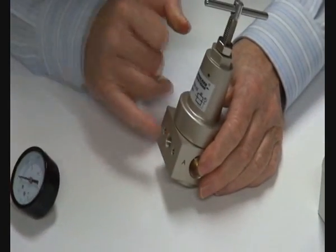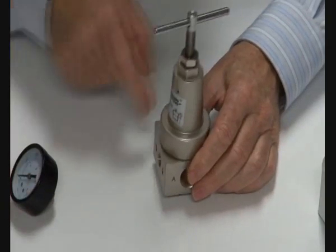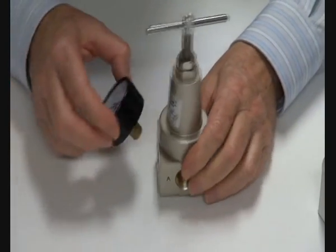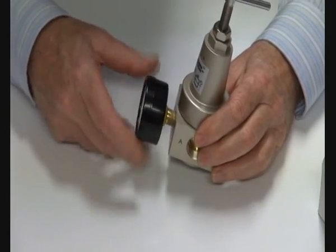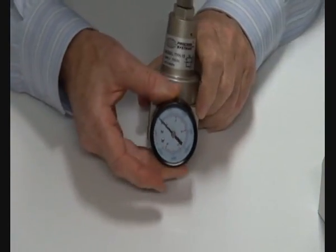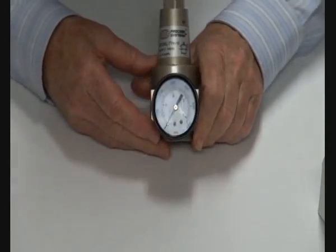You can swap the gauge port from one side to the other depending on how you mount it. Use thread tape or sealant when installing the gauge into the gauge port, and mount it so the gauge faces the correct direction.